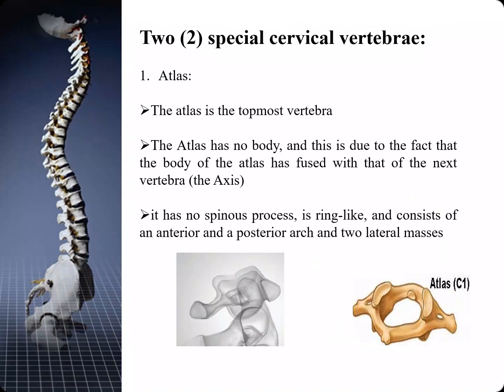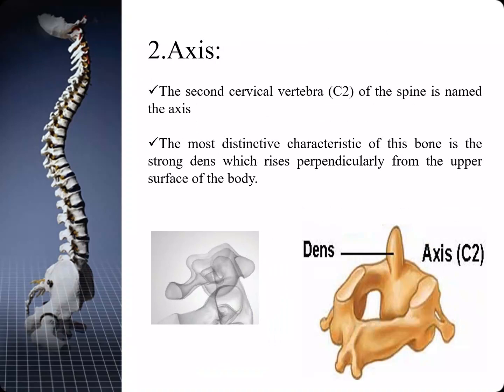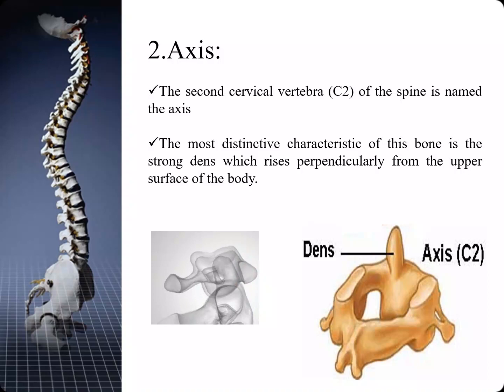The top two cervical vertebrae are known as the atlas and the axis, or C1 and C2. These allow us to rotate and nod our head. The dens of C2 actually fits into C1. This is very important in trauma because we look at the pre-dental space to see if there is any widening of that space, which would indicate a fracture or dislocation.